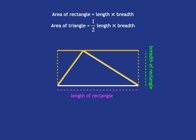And so the area of the triangle will be half length times breadth, but obviously we want to talk about the area of the triangle in relation to the kind of triangle itself.